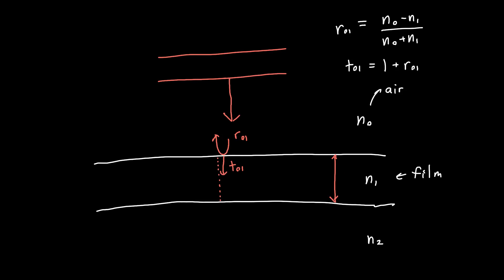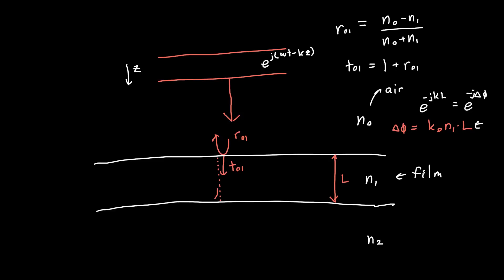The phase accumulation delta_phi is just k0 times n1 times L, where k0 is the free-space wave number. Our traveling wave picks up an extra factor of e^(−j·delta_phi) each time it traverses the film. The wave then reflects off the back interface, and we know how much reflects: that's r12 — just replace indices 0→1 and 1→2 in the reflection formula.